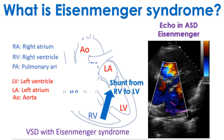Eisenmenger syndrome is a condition in which long-standing high pulmonary blood flow leads to irreversible pulmonary hypertension with reversal of shunt. Right-to-left shunt causes reduced systemic oxygen saturation with cyanosis.